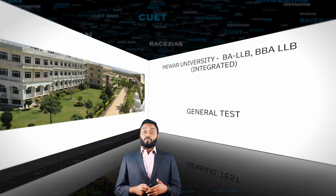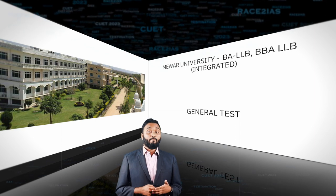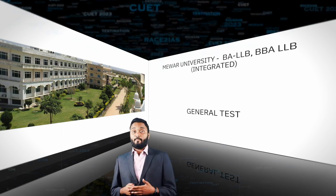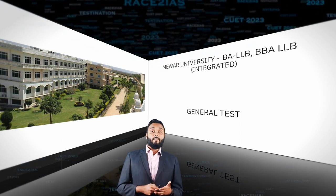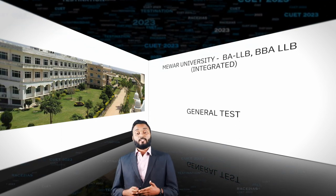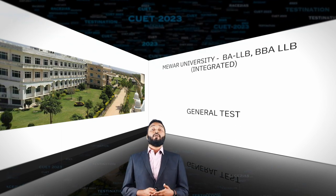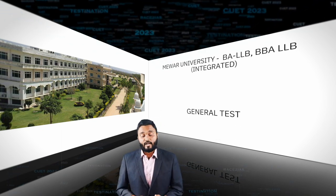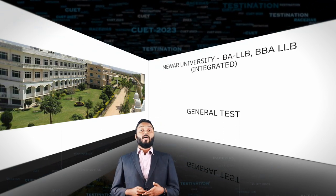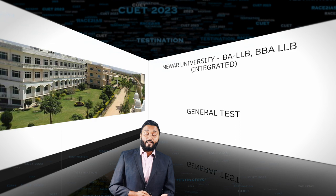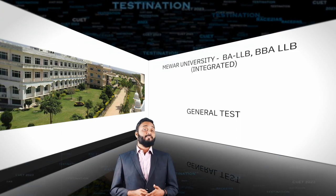Then comes Mewar University in Chittorgarh, Rajasthan, which offers two courses: BA LLB and BBA LLB. The BBA LLB is an integrated course. For both these courses, you can write the General Test to gain qualification. There are also plenty of other private universities which you can see scrolling on screen.